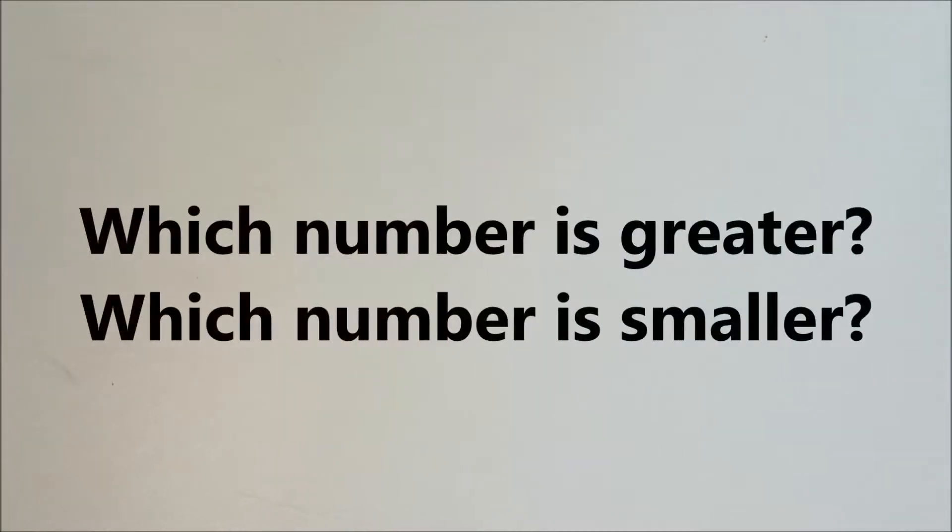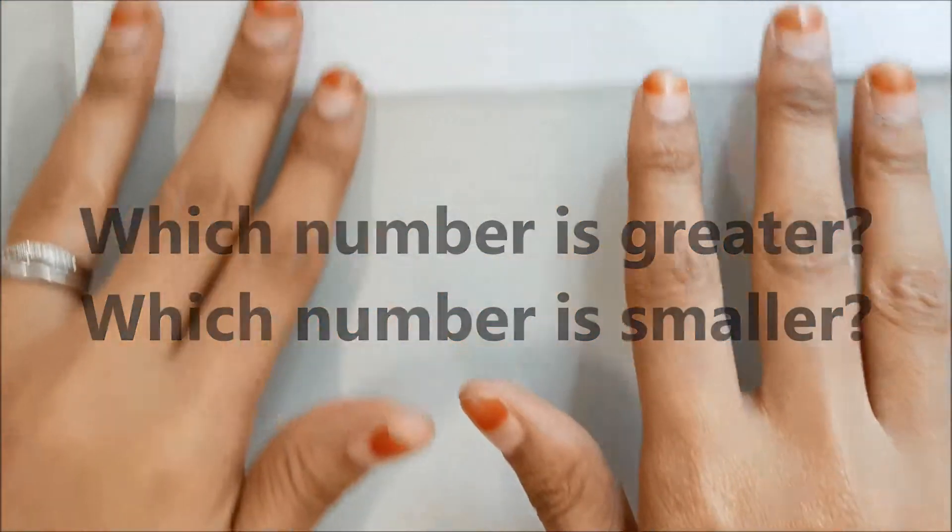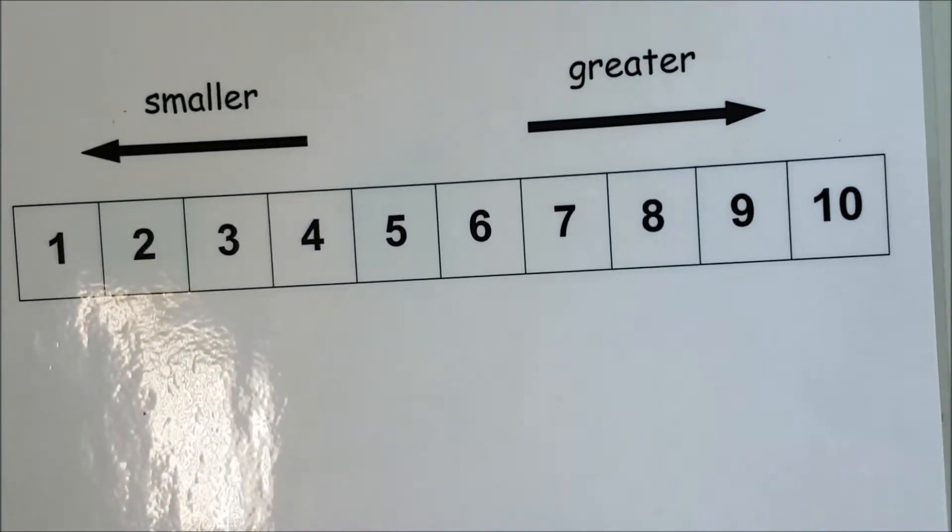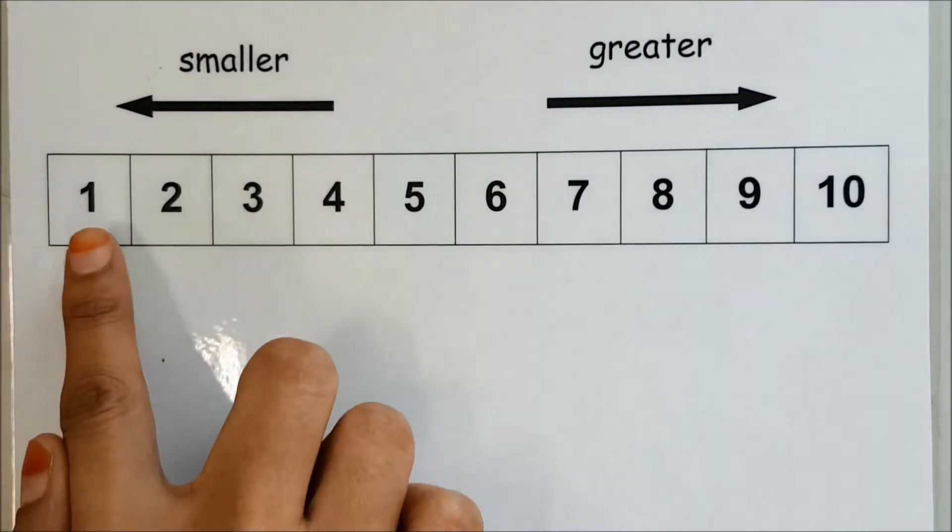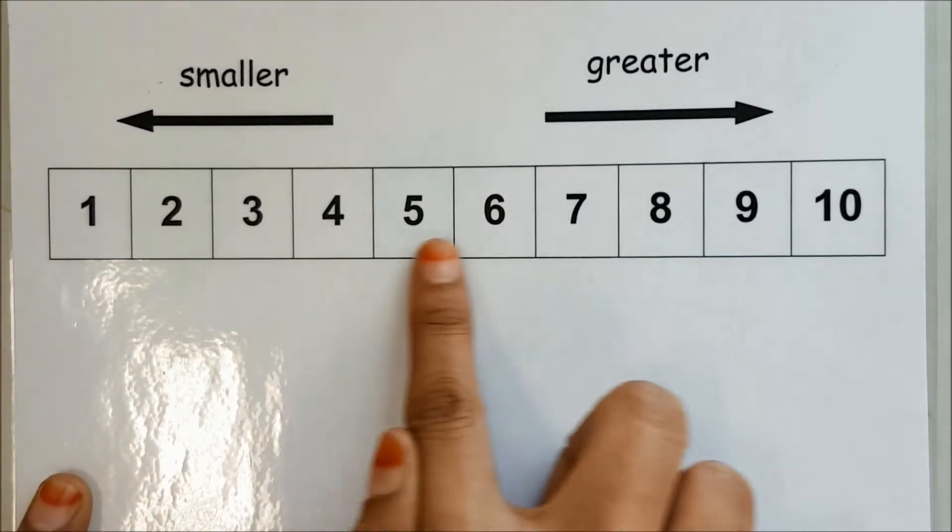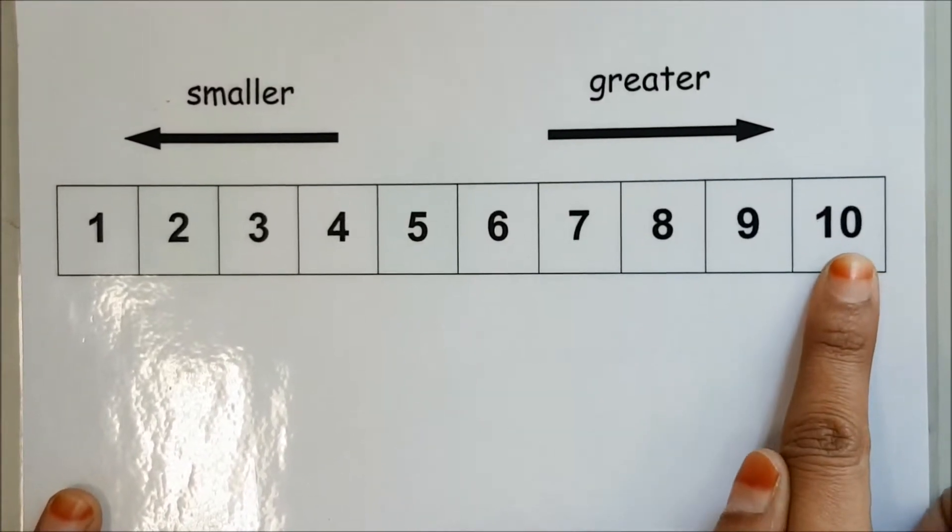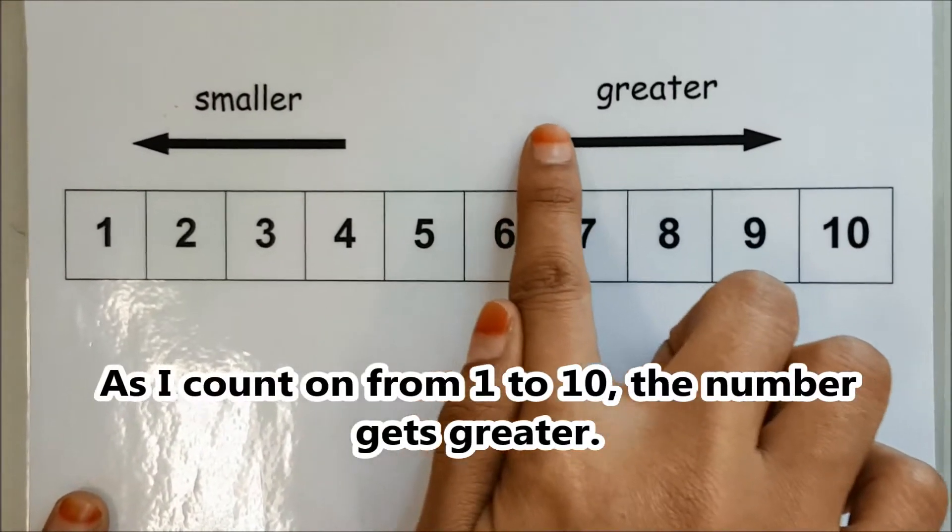Let's compare two numbers to find out which number is greater and which number is smaller. Let's use a number tape to compare the numbers. As I count on from 1 to 10, the number gets greater.